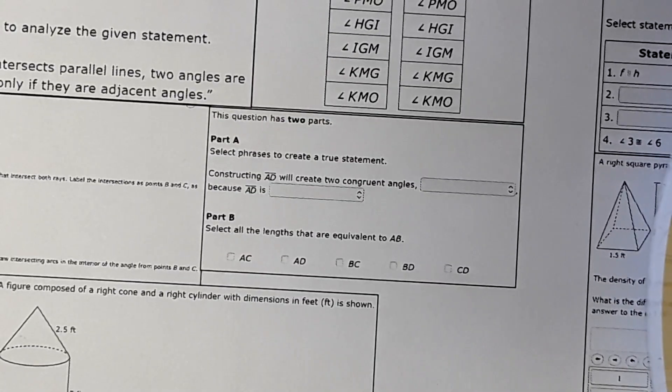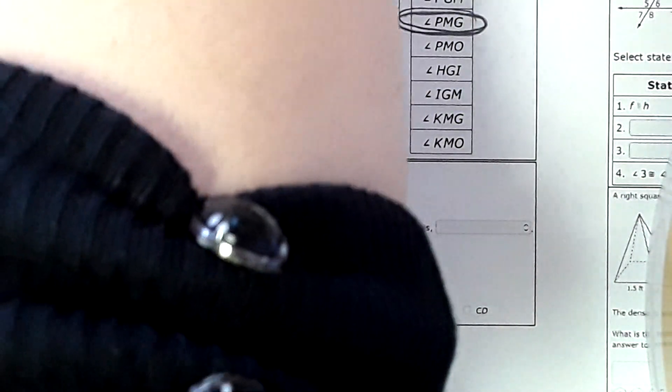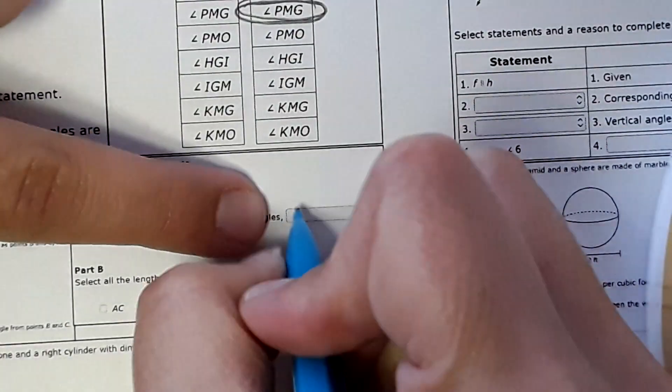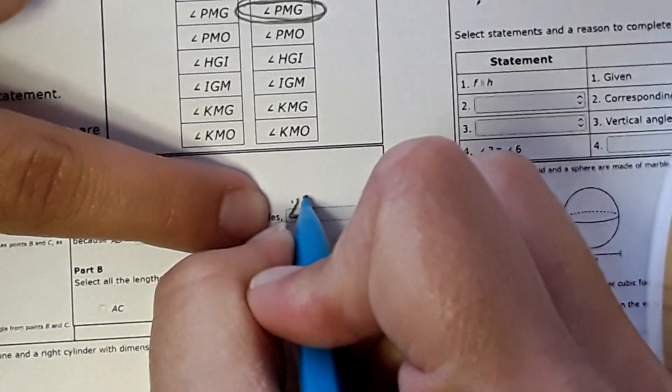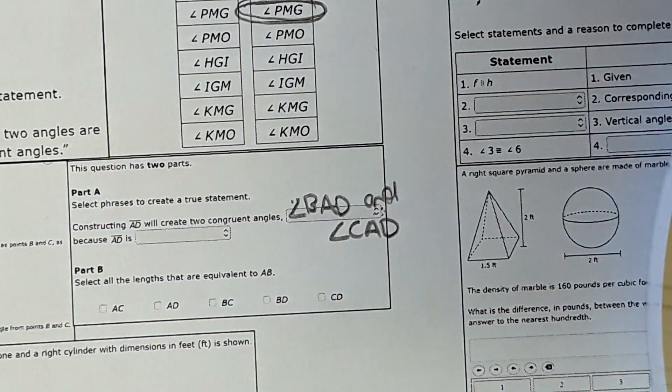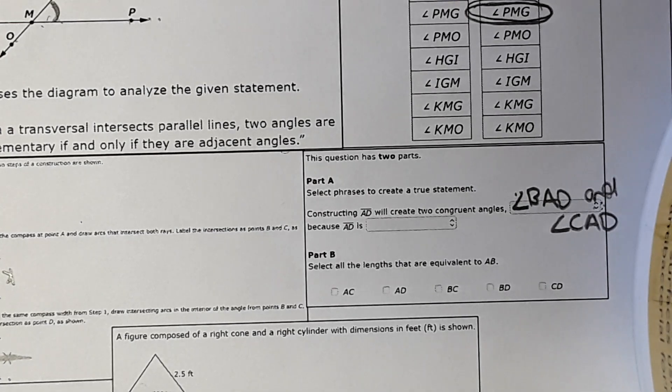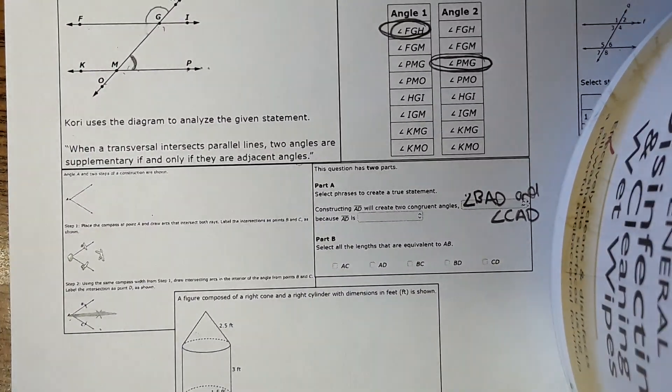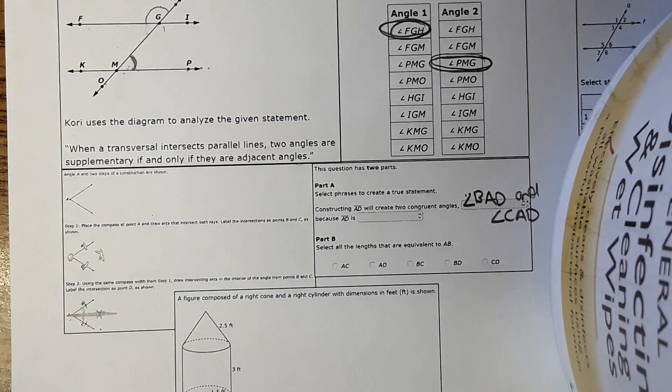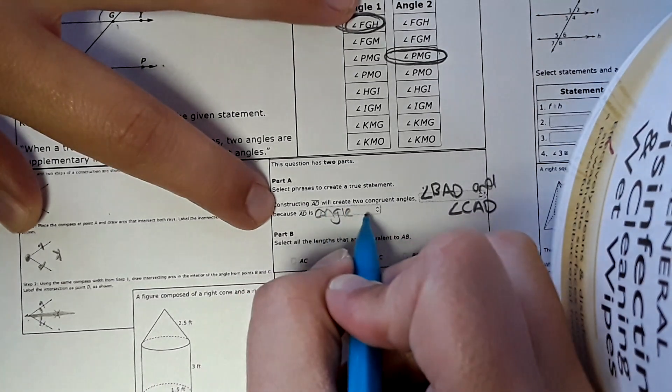So it says constructing segment AD will create two congruent angles. And what they're looking for as the answer there is actually the angles. There's a drop down and there will be answer choices. We're going to actually practice this on the computer tomorrow. And this will actually be your answer key that you use on the computer test. So the answer is angle BAD and angle CAD. So there will be a drop down with several different answers. And you're looking for the answer. So BAD and CAD are the angles. This is equal to this. And then because AD is an angle bisector, we mentioned that angle bisector.